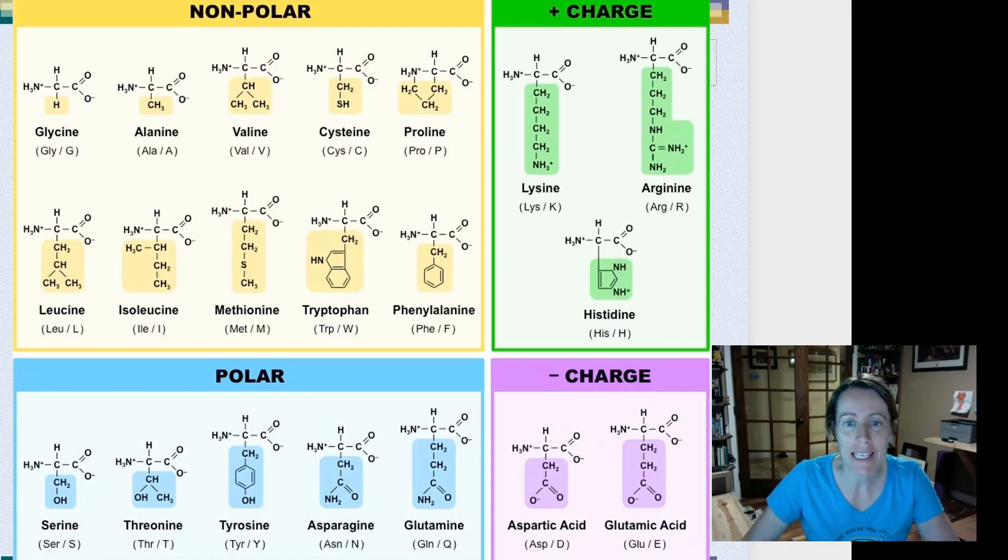But you can see here their names. So glycine, for example, is the name of an amino acid, alanine, valine, cysteine. They tend to end in 'ene'. Not all of them - there's tryptophan down here, glutamic acid over here. But 'ene' is a pretty common ending.